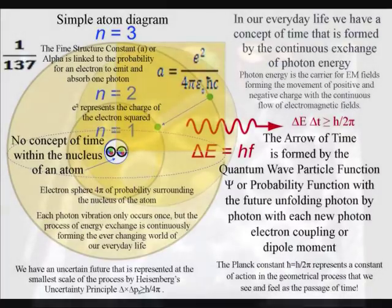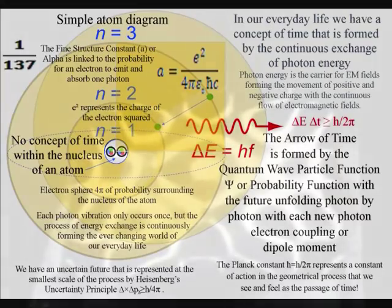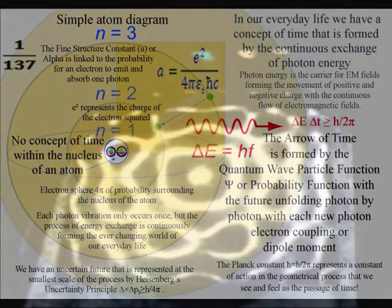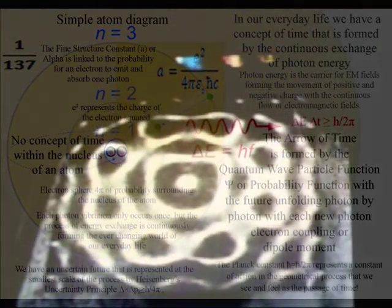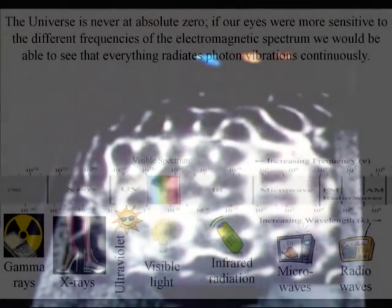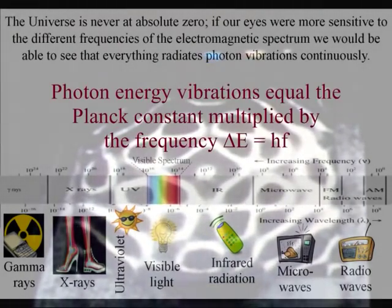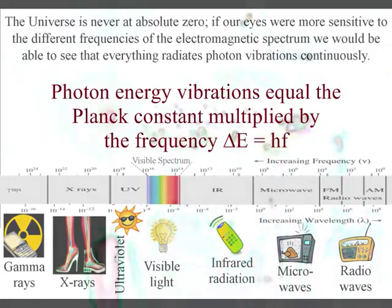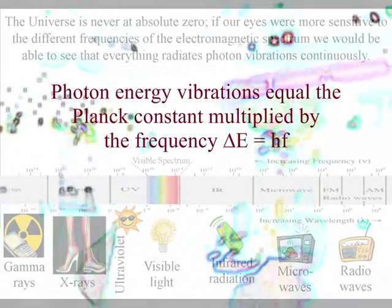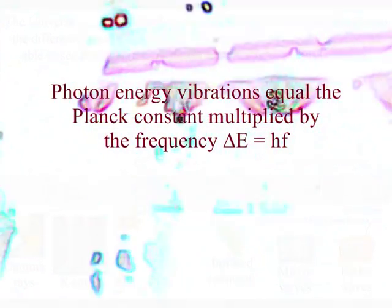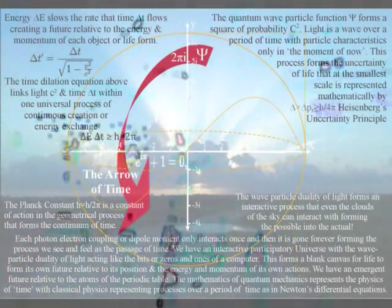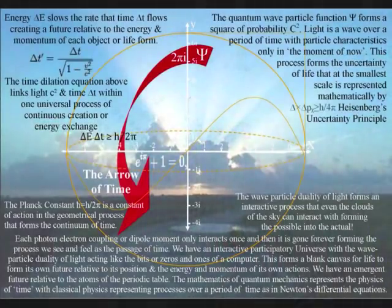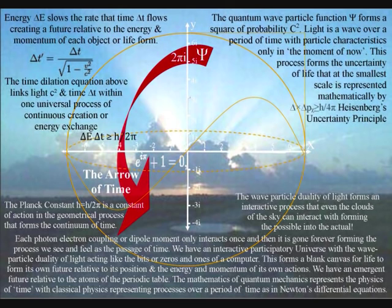With the spontaneous absorption and emission of photon energy, even if we do not add vibrations in the form of sound, the vibrations are always there in the form of photon oscillations with the future unfolding with each new photon electron coupling or dipole moment. This is because the universe is never at absolute zero. If our eyes were more sensitive to the different frequencies of the electromagnetic spectrum, we would be able to see that everything is radiating photon oscillations or vibrations continuously. The prime example of this is photon energy continuously cascading down from the sun forming greater degrees of freedom for the disorganization of entropy that we have in the second law of thermodynamics. We see and feel this process as the passage of time with each photon oscillation only occurring once.